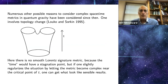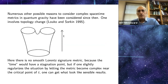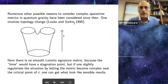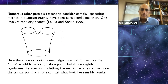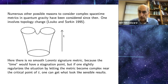Since then, there have been numerous other reasons. For example, one interesting application of complex space-time metrics was by Louko and Sorkin in 1995. They were interested in topology change, and they considered Lorentz signature more physical, so they wanted to study topology change in Lorentz signature.